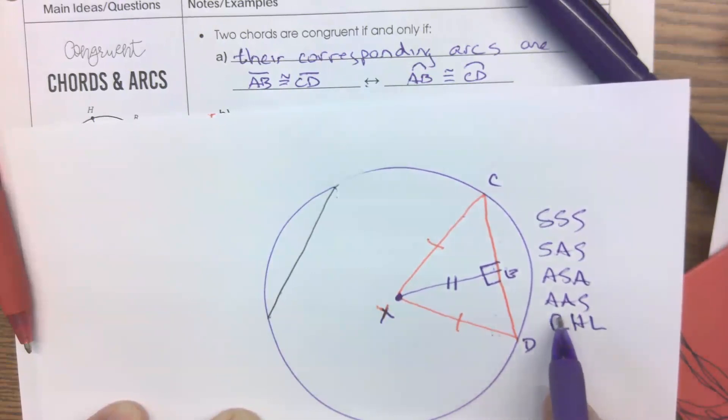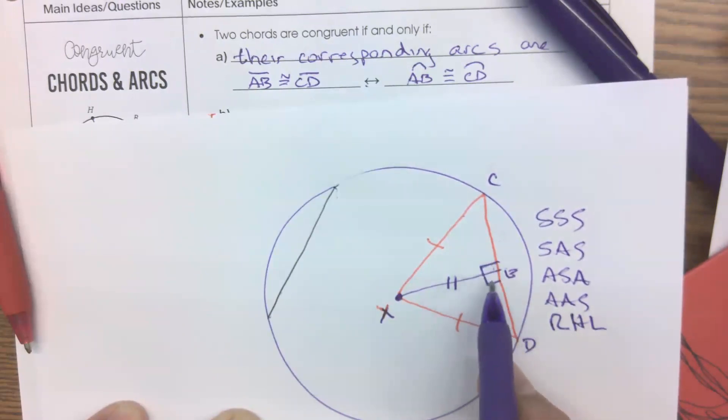R-H-L. When we have a right angle and we have the hypotenuse in the leg. Is that what we've got here? Right angles, hypotenuse, and leg. And again, sometimes that's just called HL. But these two triangles are congruent by what I call R-H-L.